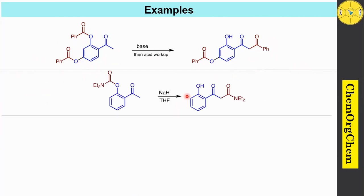In the next example, when you use sodium hydride and THF, this acyl group is transferred into this carbon to produce this 1,3-dicarbonyl compound as a product.